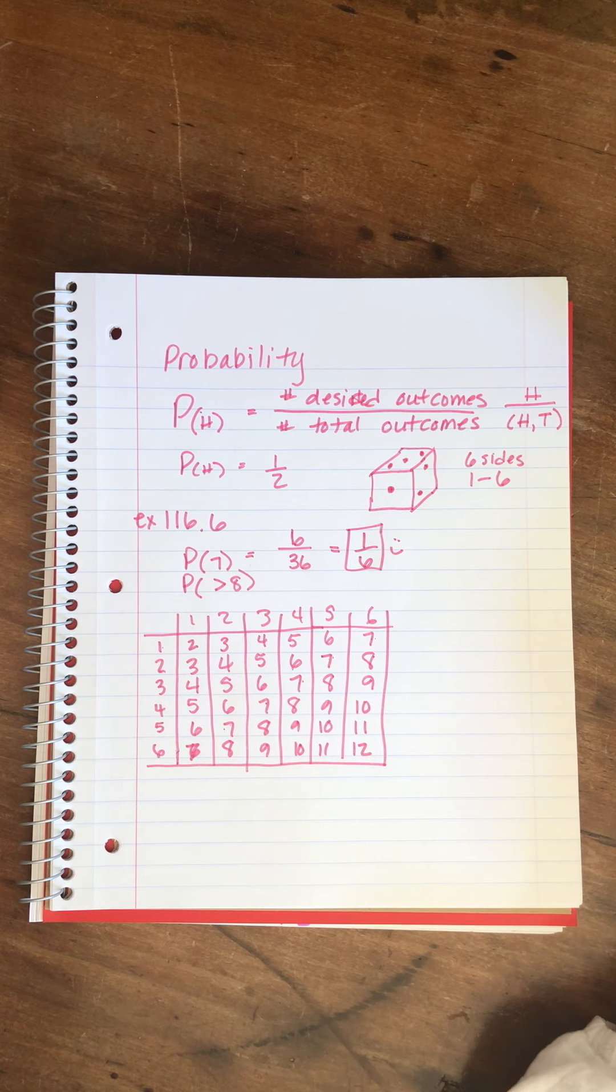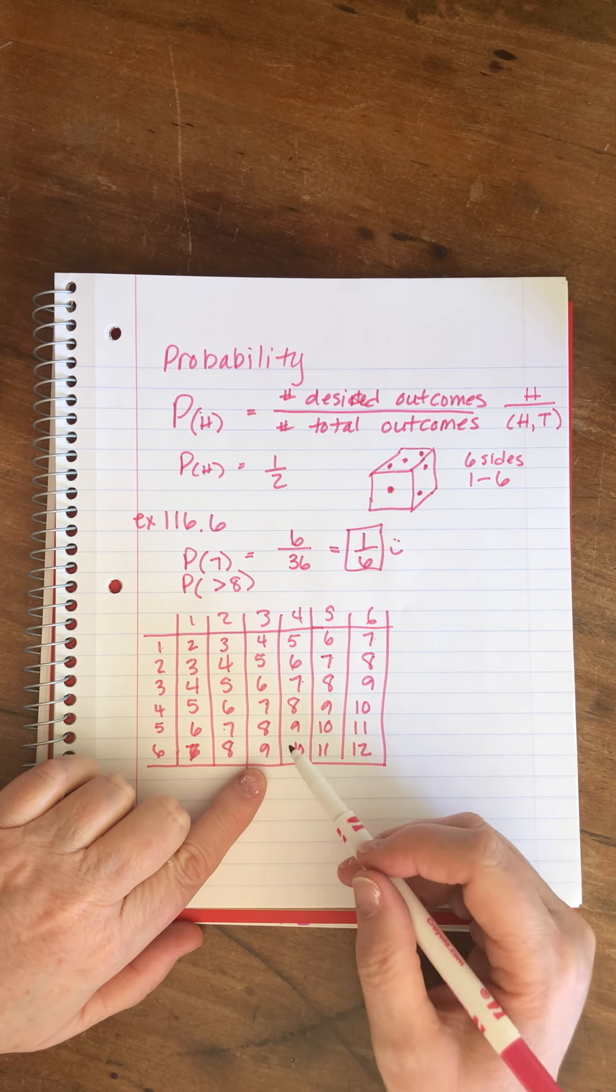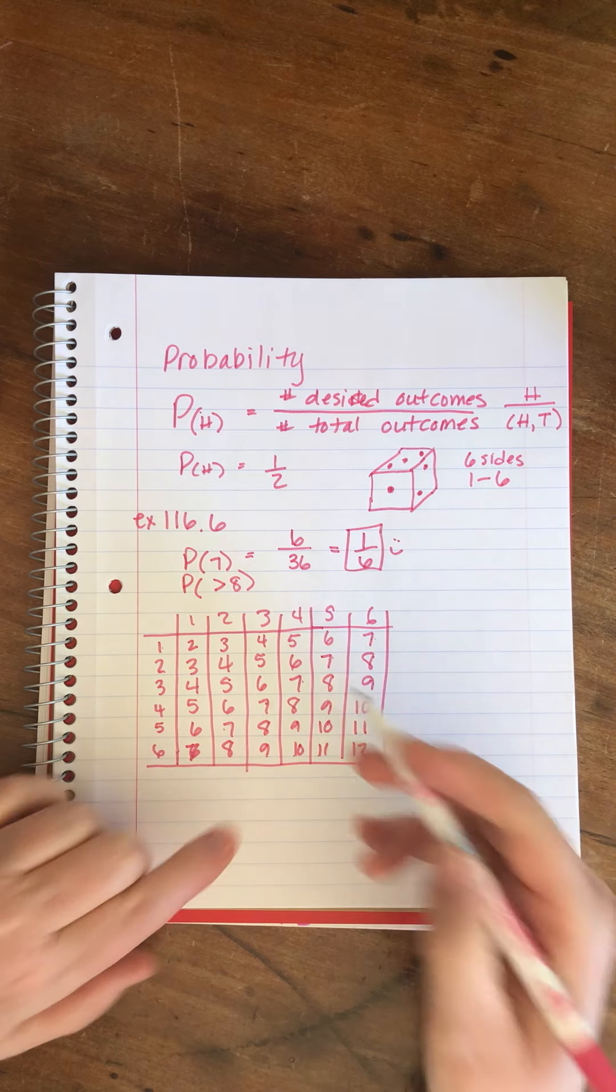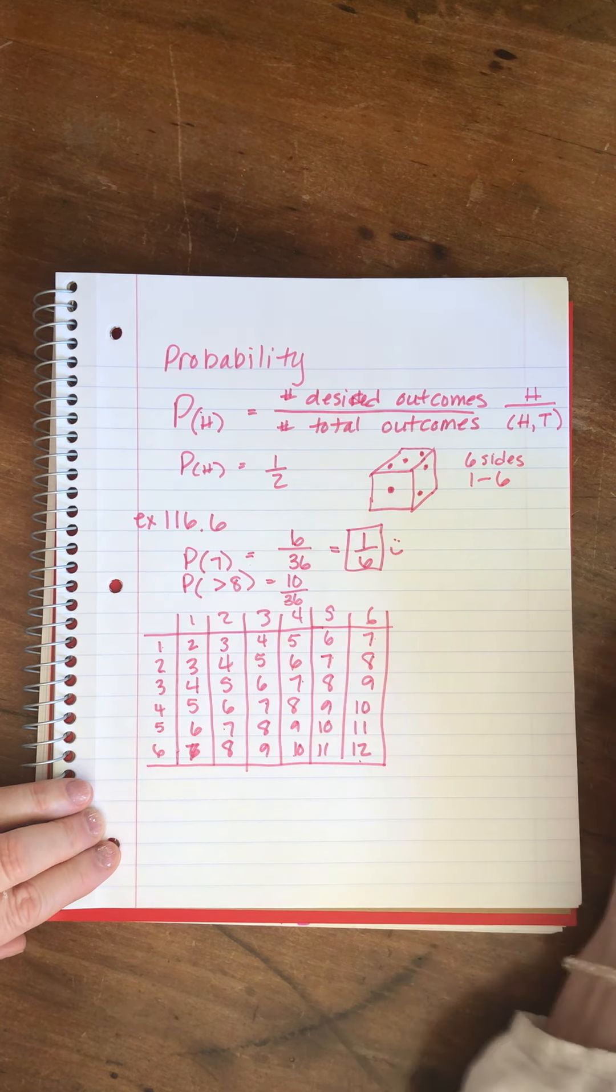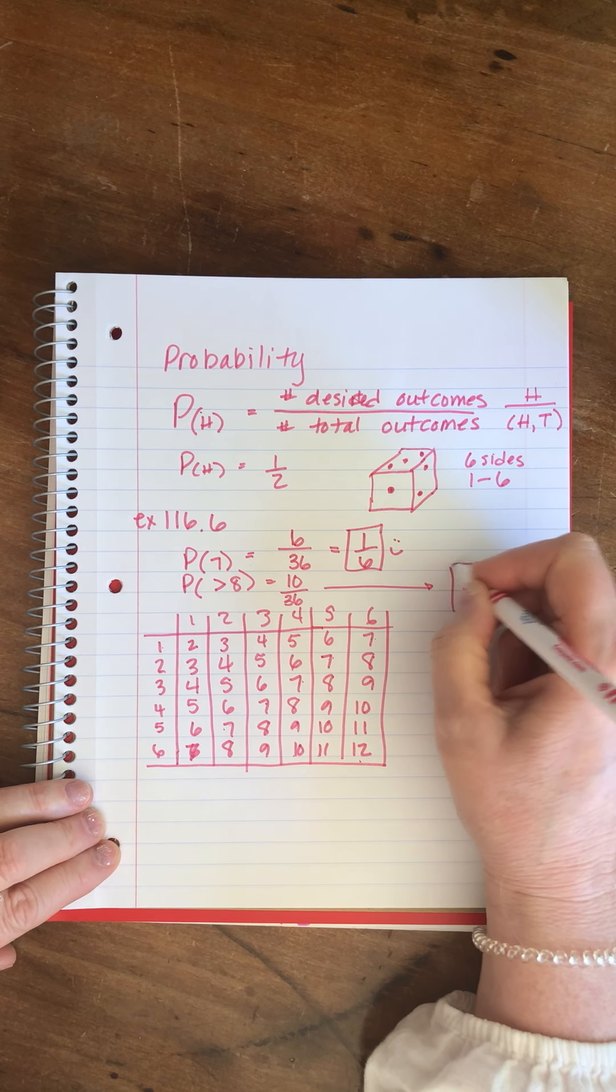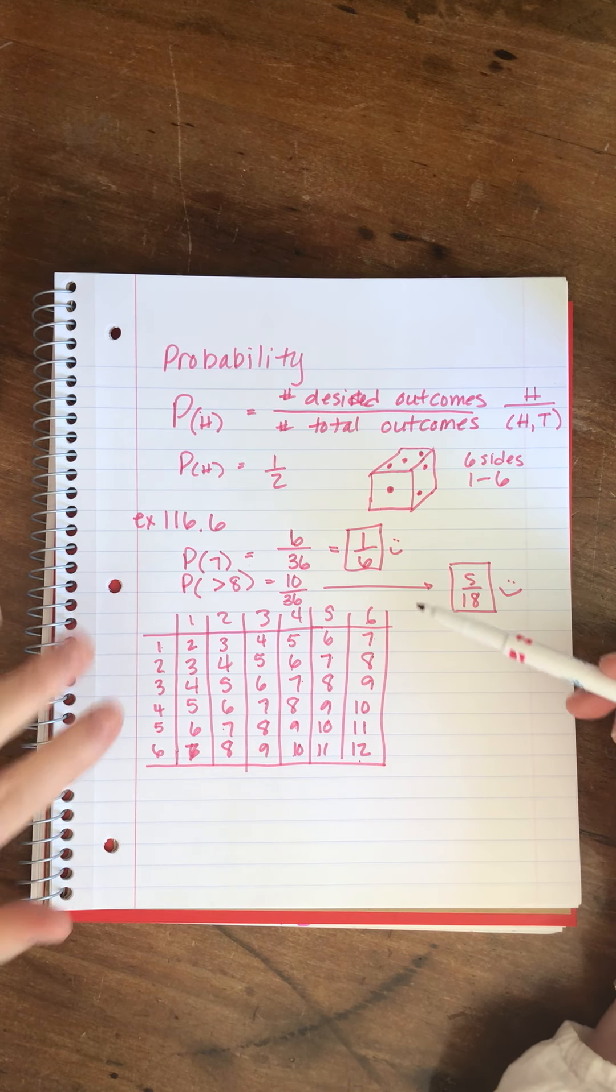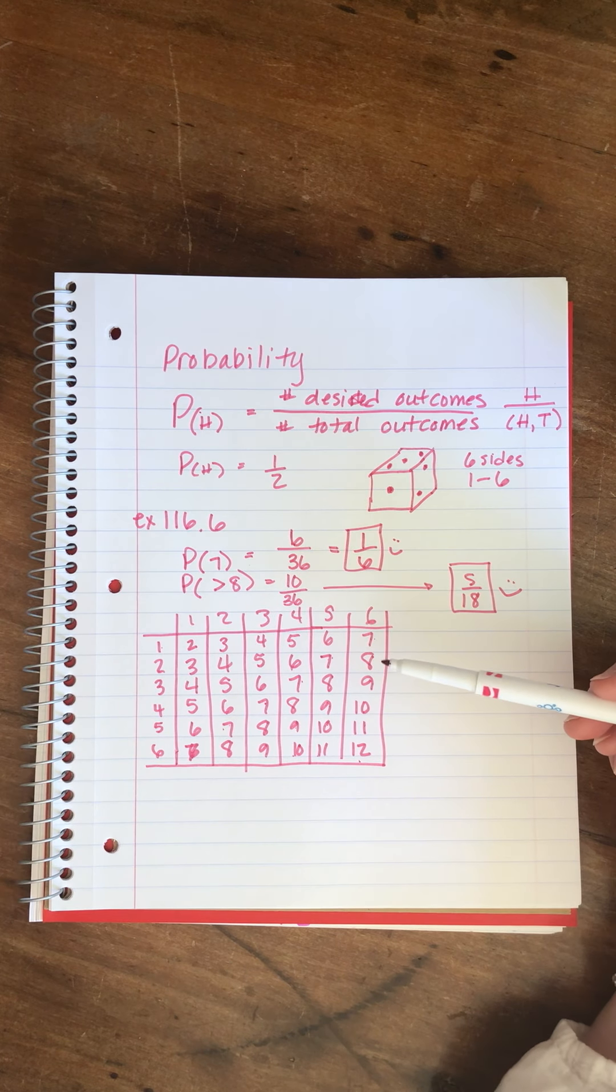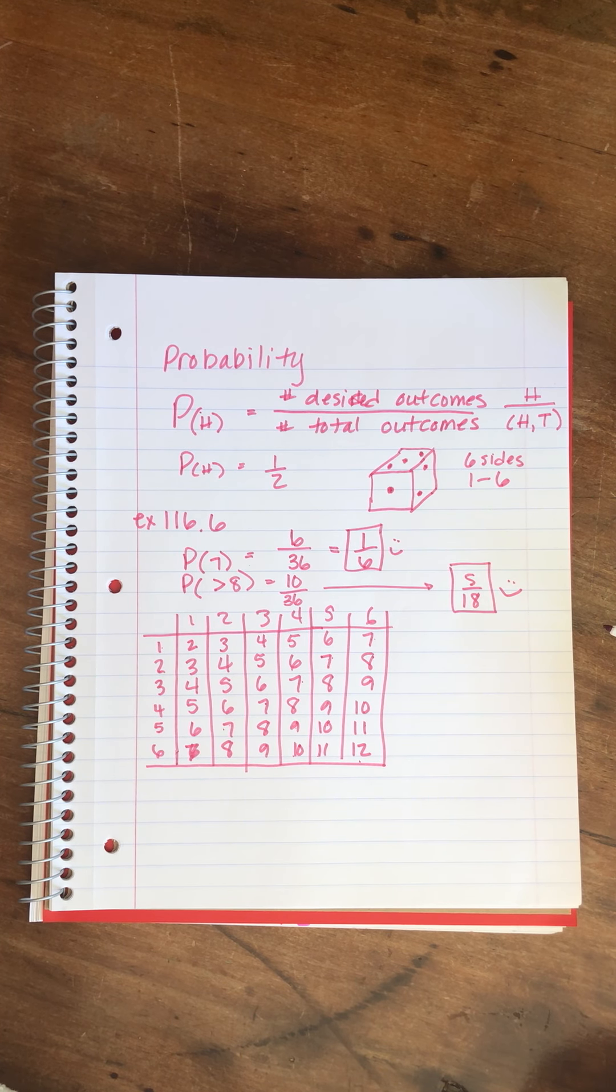Now the question is, what's the probability of rolling a seven? We're going to use the number of desired outcomes over total outcomes. How many sevens? Look at all the different ways we can get a seven: one, two, three, four, five, six different ways. Six different outcomes will give us a move of seven out of how many outcomes in all? If you count these all up, you'll find there are 36 different outcomes because it's six times six. So the probability of rolling a seven is six outcomes out of 36, which we can also reduce to one over six. What about the probability of rolling greater than eight? We want the really high scores, so we're going to count any score that is higher than eight. So we'll start with the nine. There are ten rolls that we can get that are greater than eight, and that's out of the total of 36, so we can reduce that to five out of eighteen.